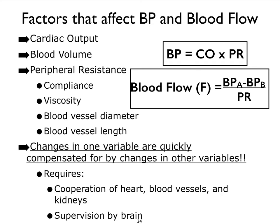Because blood pressure is a product of cardiac output, we're going to revisit the things that regulate cardiac output very briefly, because we have studied this before. We're going to discuss in this particular video the importance of blood volume and how that affects blood pressure. In other videos, we'll take a look at the impact of peripheral resistance on blood pressure, a really important factor.